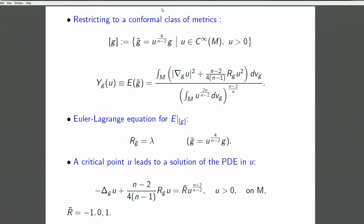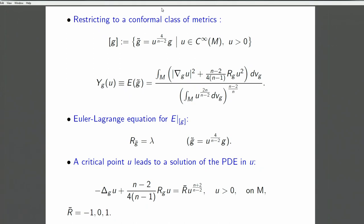We only look at the functional of positive functions multiplied by g, running through positive functions. If the total metric space is R³, one can think of this as a line in R³. One can look at this functional restricted to this conformal class. Then the critical point is given by the new scalar curvature being equal to a constant — namely, this equation has a variational formulation.